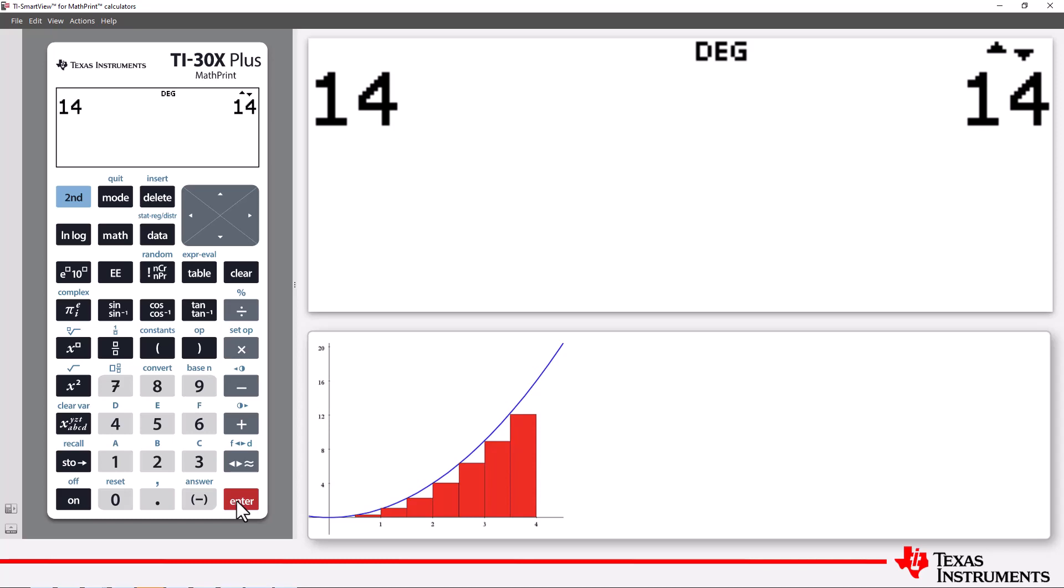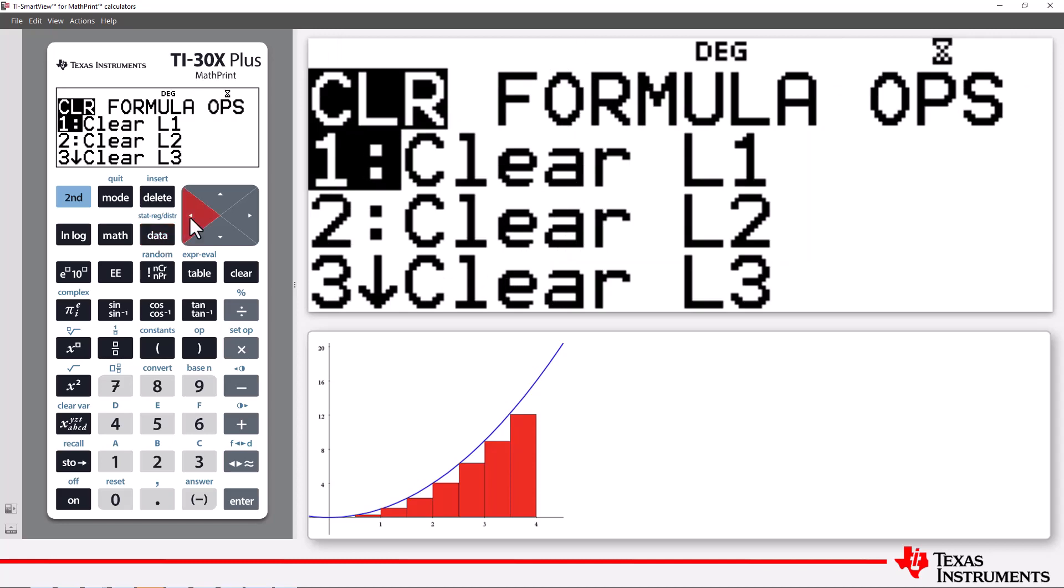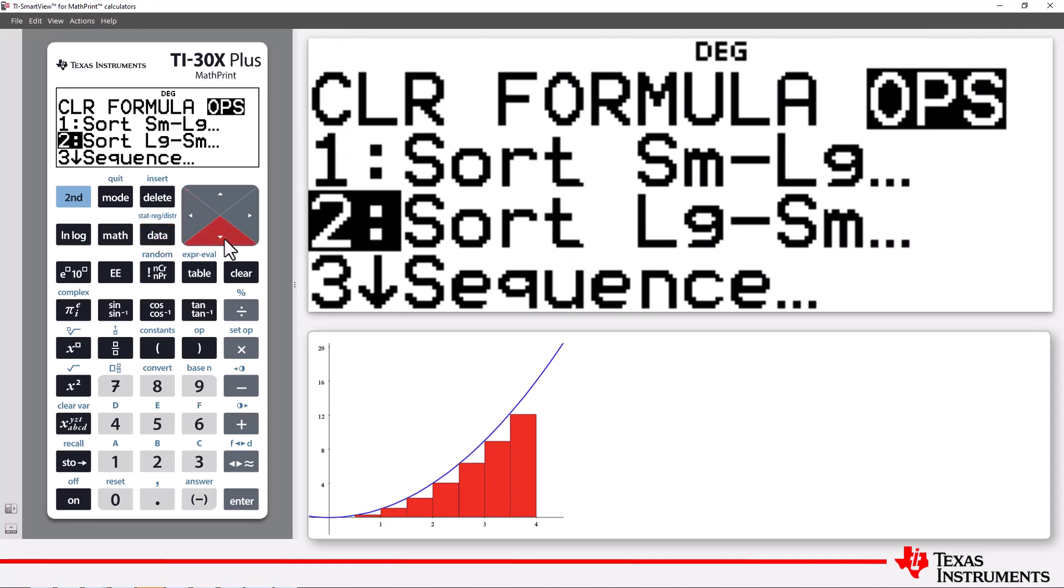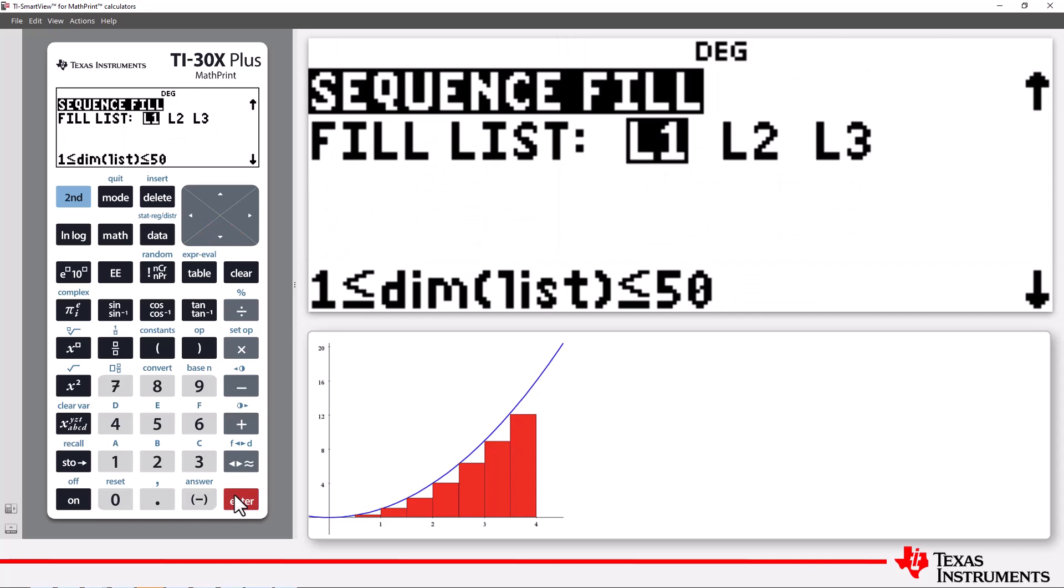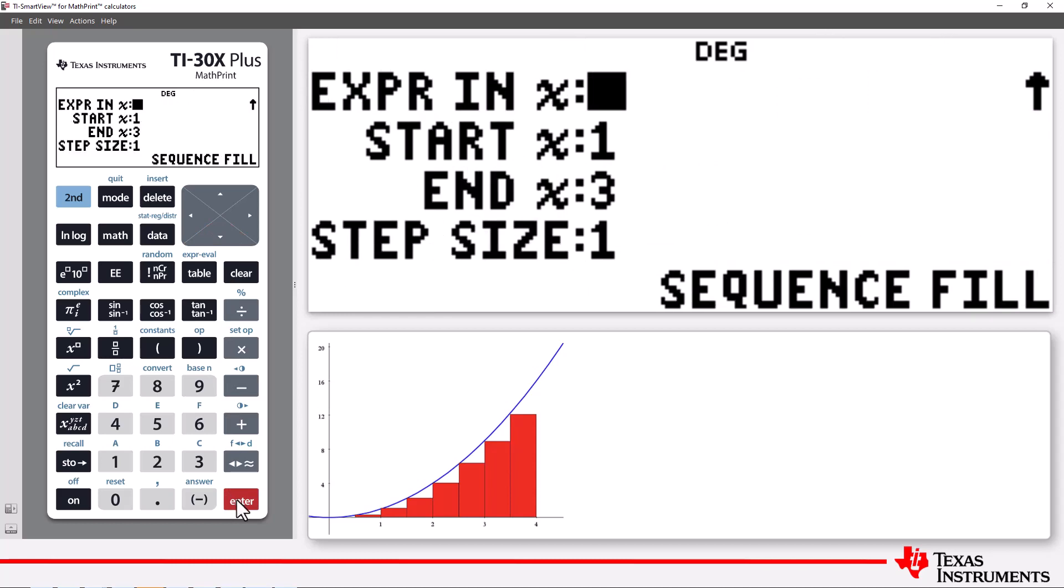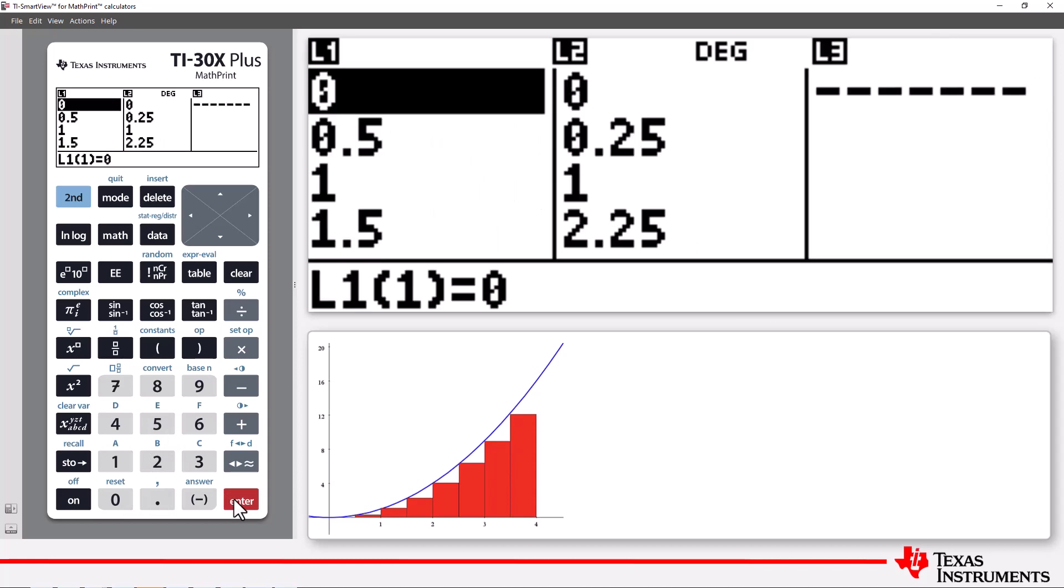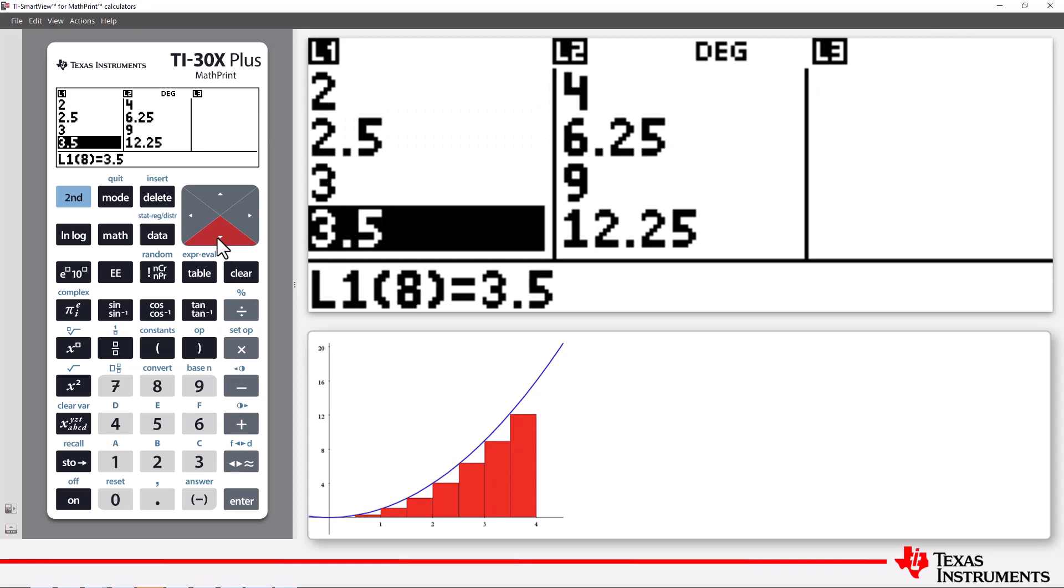This time, I'll use a sequence to generate the x values. The x values go in list 1. Now for the sequence formula. If I break the region up into 8 columns, the formula is simply x, starting at 0 and ending at 3.5, with a step size of 0.5. We can see the calculator has generated all the x values we needed. As the formula for list 2 is still active, the corresponding y values are also generated.